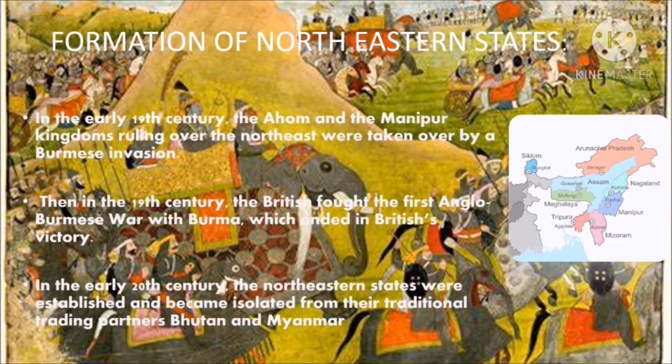Formation of Northeast States: In the early 19th century, the Ahom and the Manipur kingdoms ruling over the Northeast were taken over by Burmese invasions. There were three Burmese invasions of Assam between 1817 and 1826, during which the Ahom and the Manipur kingdoms came under the control of Burma. During the British period, Northeast India became a part of Bengal Province. In the early 20th century, the Northeast states were established and became isolated from their traditional trading partners like Bhutan and Myanmar.